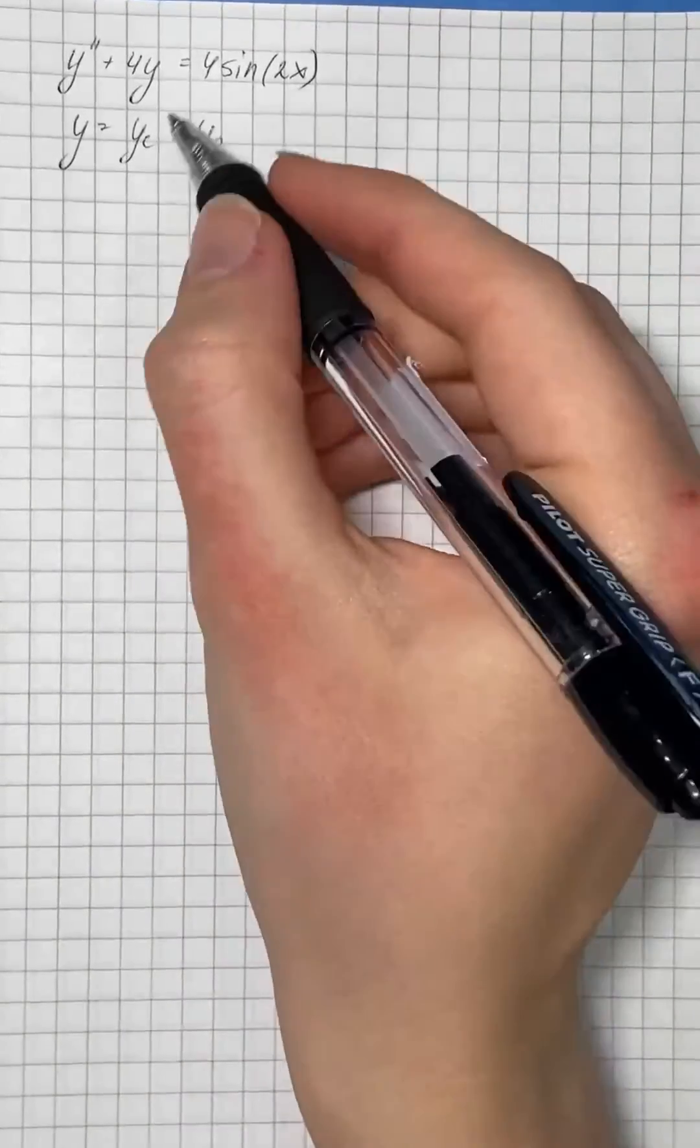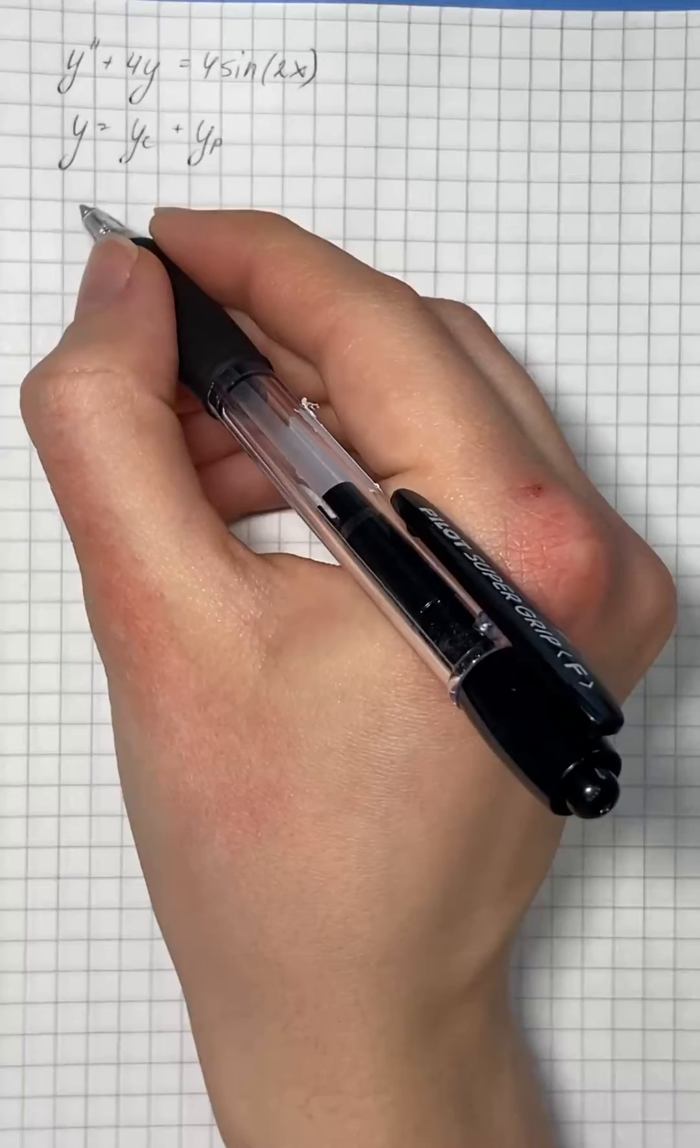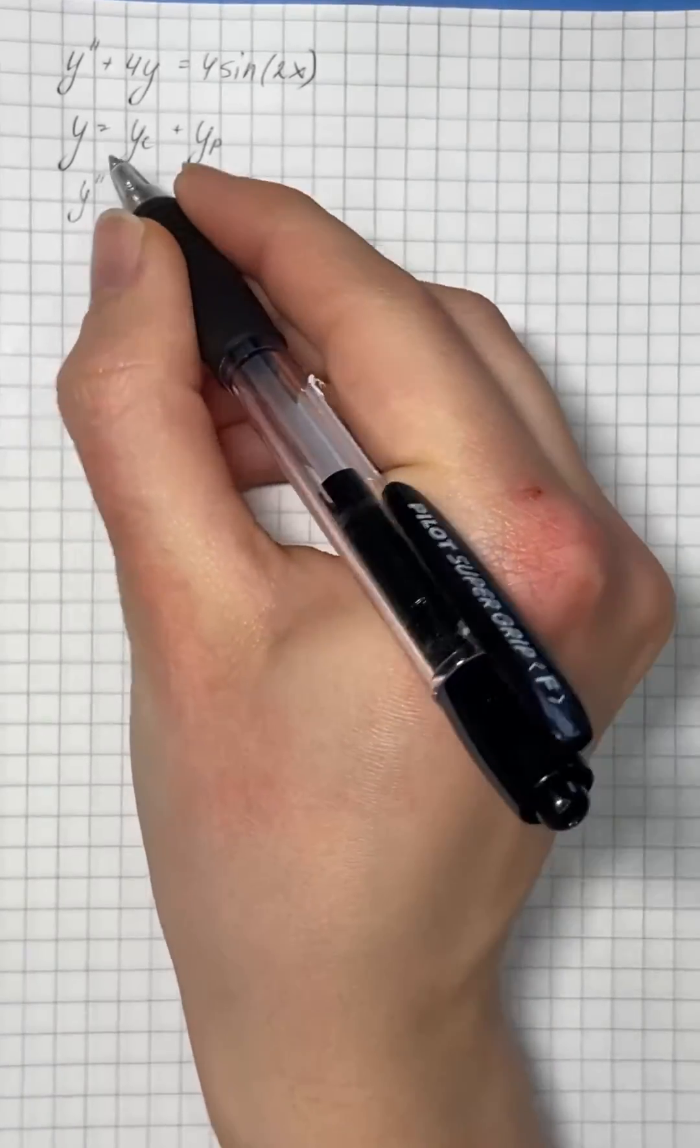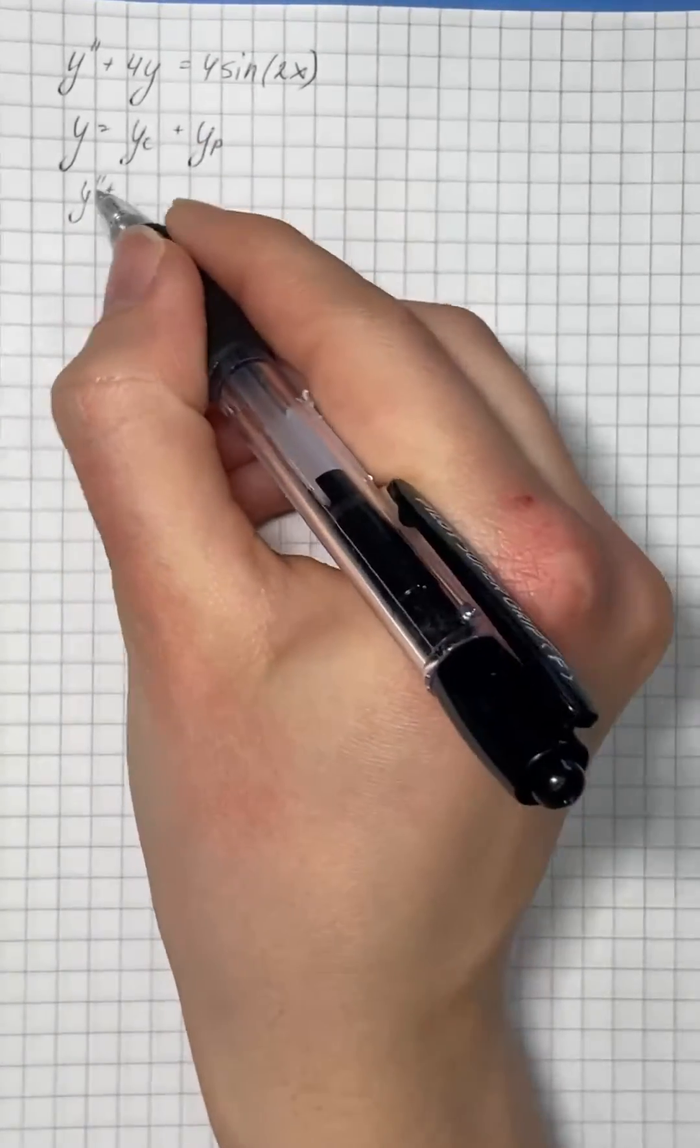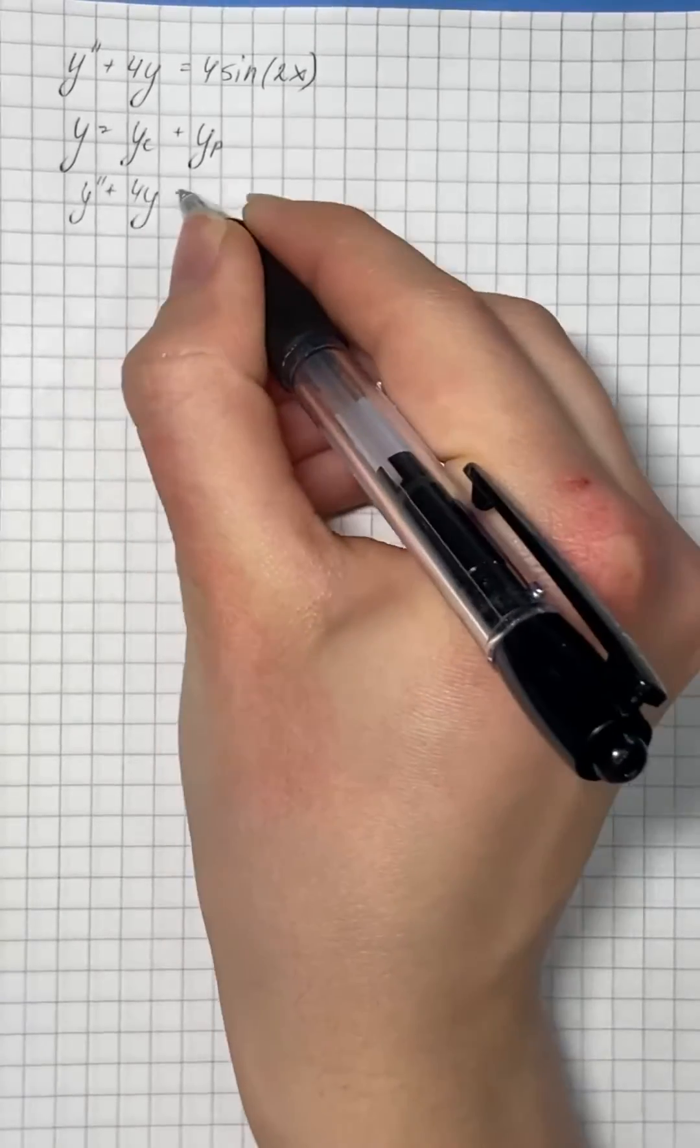We start with the complementary solution by solving the similar homogeneous differential equation y double prime plus 4y equals zero.